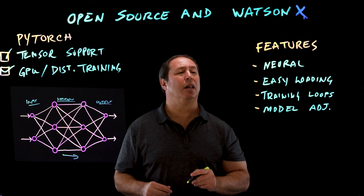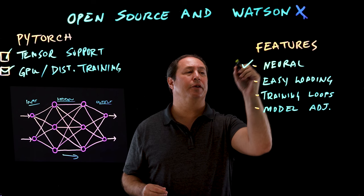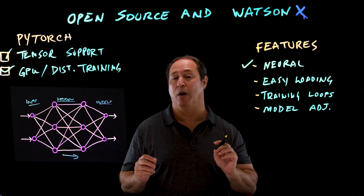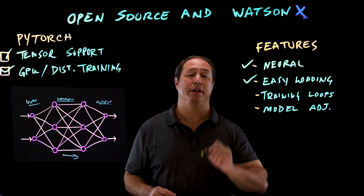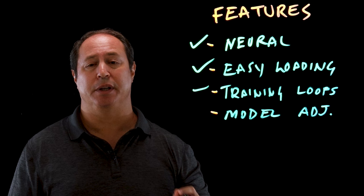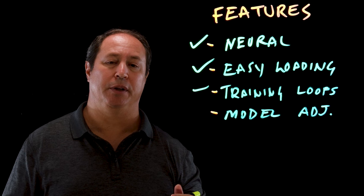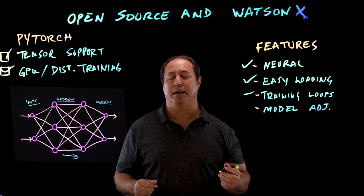Let's look at the key features that PyTorch provides. One is neural network creation — there are different types of neural networks and PyTorch makes it easy to create all the popular types. PyTorch also provides easy loading of data. Another key feature is training loops: built-in, easy-to-use training loops that tweak the model data to improve its ability to more accurately provide inferencing.